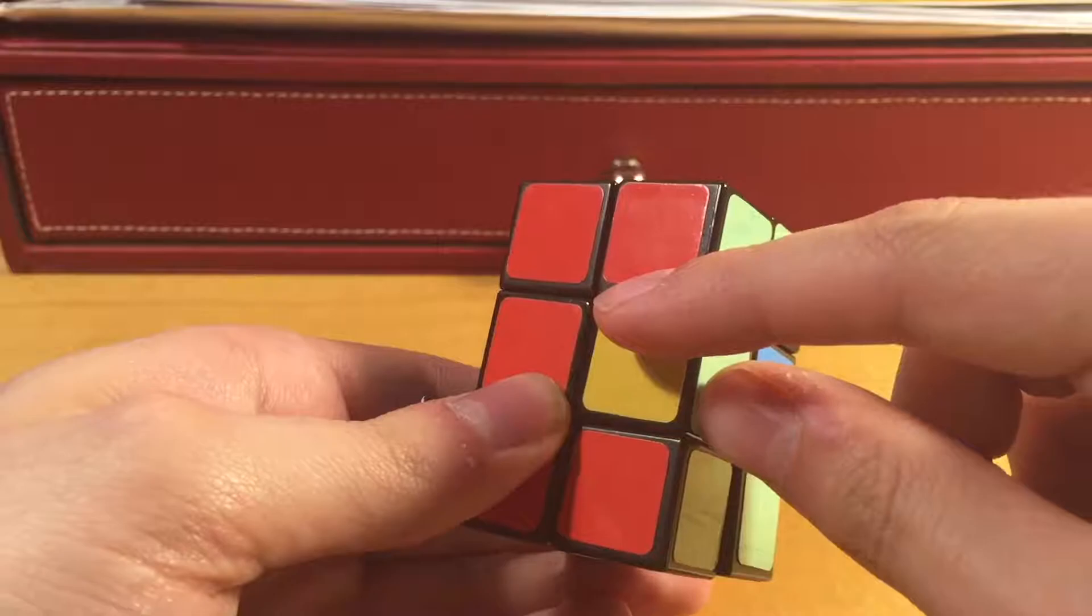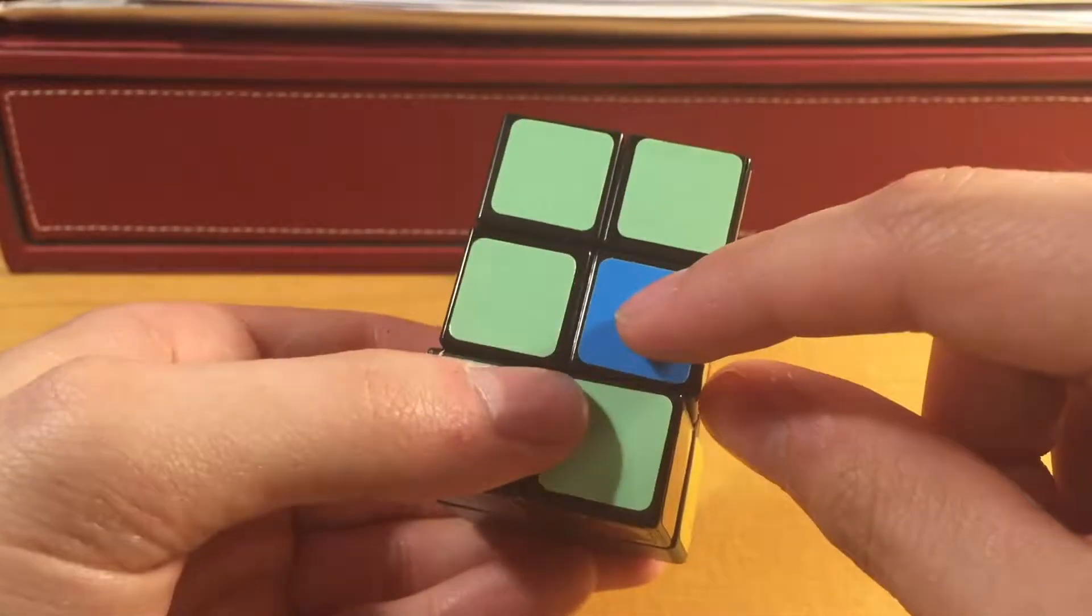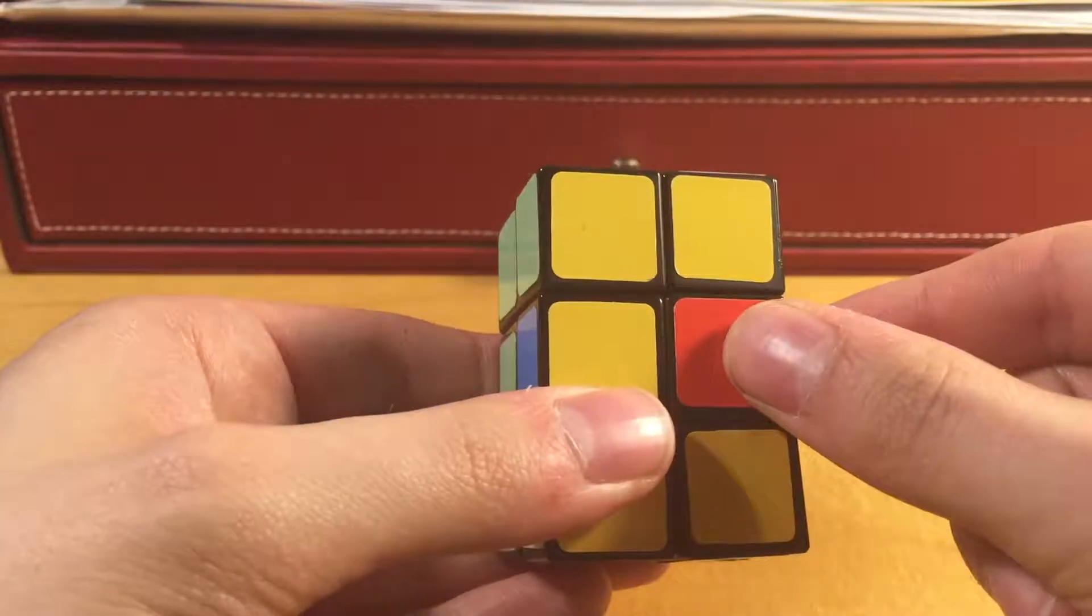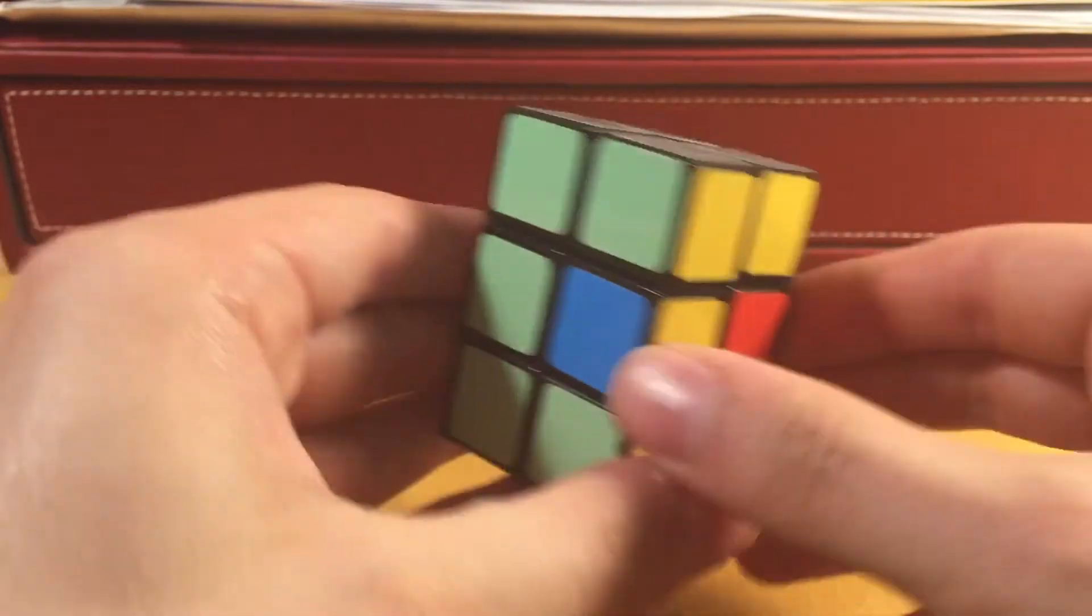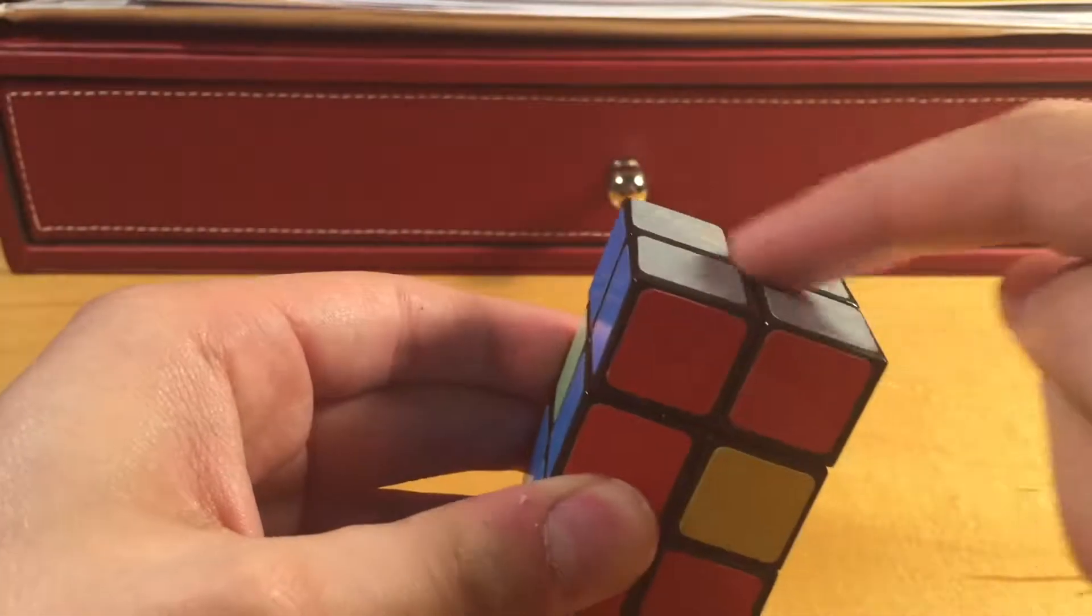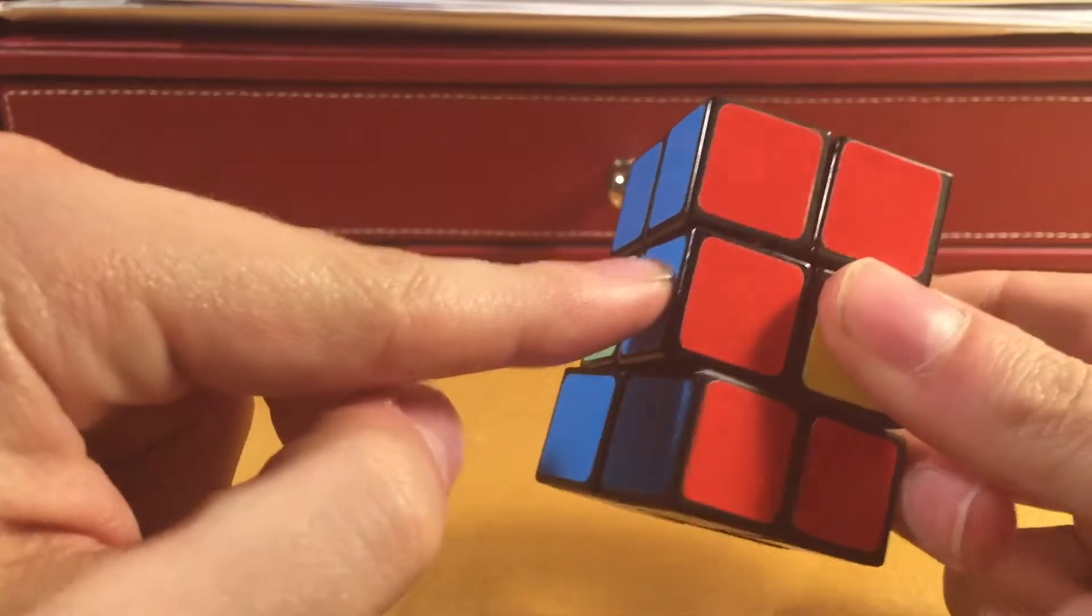So, this edge piece needs to be flipped around and then moved over here. This edge piece needs to be flipped around and then moved over here. And then, this edge piece needs to be flipped around and moved diagonally across the cube to this position. So, basically, these three edges need to be cycled, and this is the only one that's properly oriented.